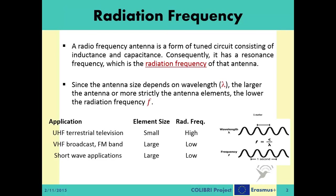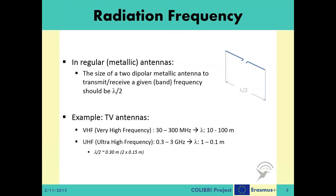Examples include UHF terrestrial television, the VHF broadcast and FM band, and shortwave applications. Regarding the radiation frequency, in classical metallic antennas, the size of a dipolar metallic antenna to transmit or receive in a given frequency band should be λ over 2.